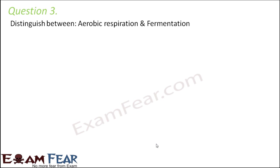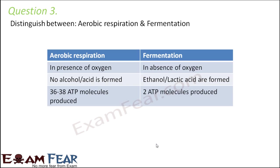Question number three: distinguish between aerobic respiration and fermentation. Aerobic respiration obviously occurs in the presence of oxygen, while fermentation occurs in the absence of oxygen. In aerobic respiration, the products are carbon dioxide, water, and lots of energy — no alcohol or acid is formed. But in fermentation, ethanol or lactic acid is formed: alcohol fermentation produces ethanol, and lactic acid fermentation produces lactic acid. The net yield of ATP is also very different — aerobic respiration produces almost 36 to 38 ATP molecules, whereas fermentation produces only two ATP molecules.